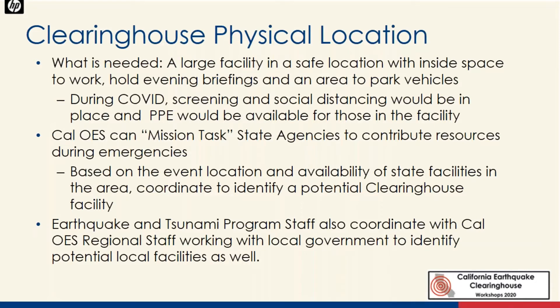Regarding the clearinghouse physical location: the size of facility needed and duration of use is based on the location of the event and the level of impact to people and structures. We need a safe location with significant parking, restrooms, electricity, Wi-Fi or good cell coverage for briefing calls, and tables and chairs. Very importantly, it needs to be structurally sound post-event — inspected and cleared after aftershocks to ensure safe occupancy. There may also be an additional need for security. During COVID, we would follow the same screening, social distancing protocols, and PPE would be available.